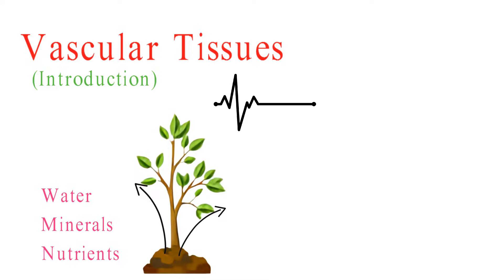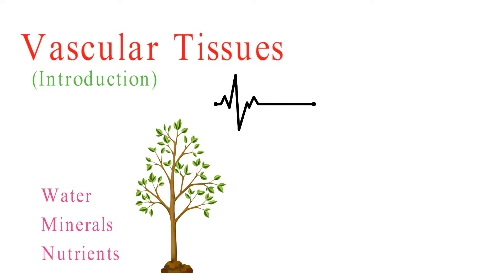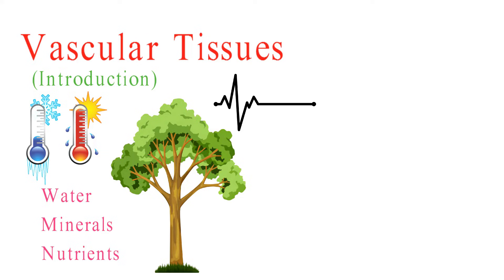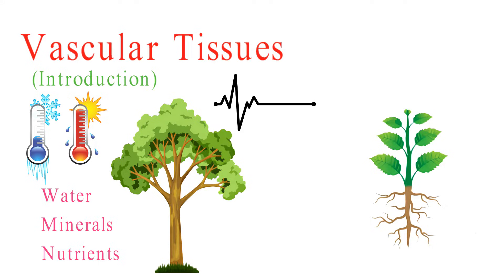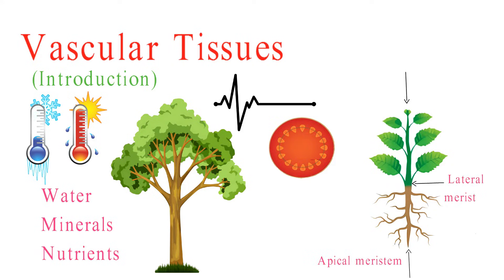Vascular bundles have been around for hundreds of millions of years. They are a key innovation in plant evolution, allowing plants to grow taller and adapt to various environments. Before we dive into xylem and phloem, let's explore how these vital tissues develop. Vascular tissues originate from meristematic cells, particularly in the apical meristems and lateral meristems, like the vascular cambium.